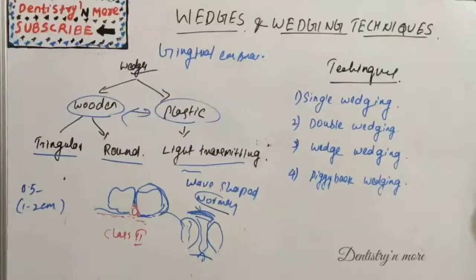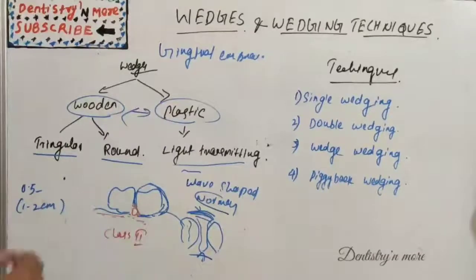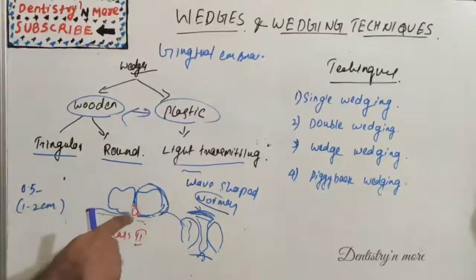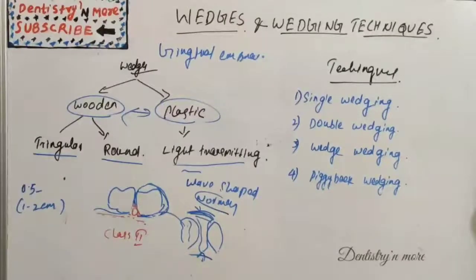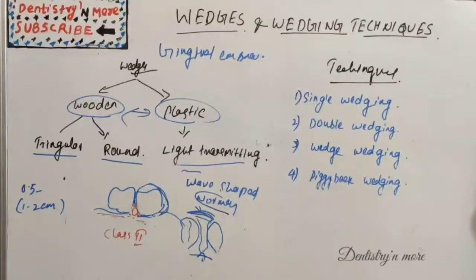Sometimes when it irritates the tongue, the wedge can be inserted from the buccal area instead. The wedge should be firm and stable during the restorative procedure and should not be forcibly inserted in the contact area, as it might lead to pain and swelling.